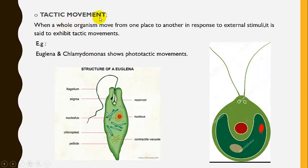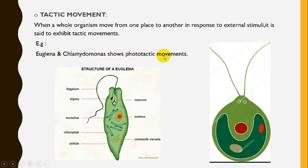The second type is tactic movement. When a whole organism moves from one place to another in response to an external stimulus such as light or any other stimulus, it is said to exhibit tactic movement. Examples of tactic movements are Euglena and Chlamydomonas, which show phototactic movements — that is, they move towards or away from the light.